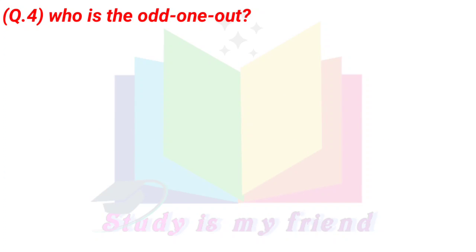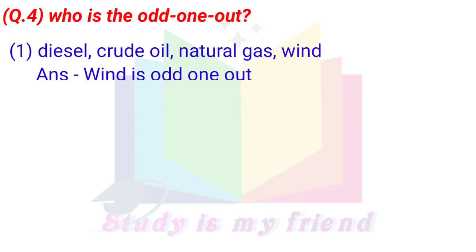Question 4: Who is the odd one out? 1. Diesel, crude oil, natural gas, wind. Answer: Wind is the odd one out.